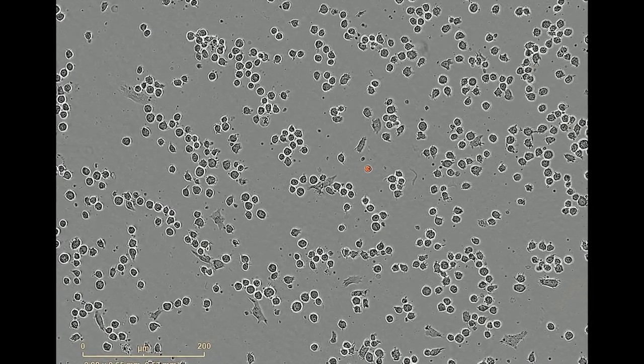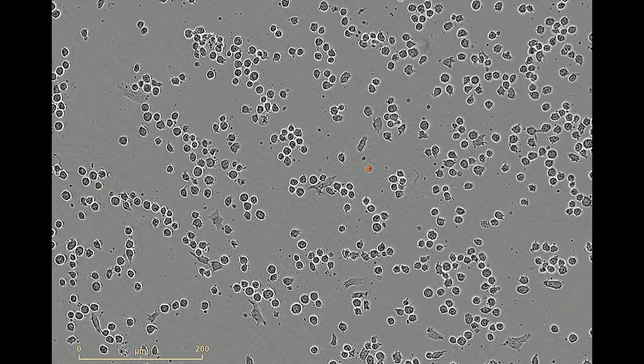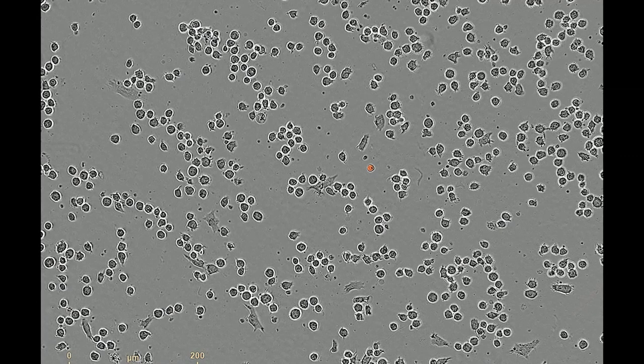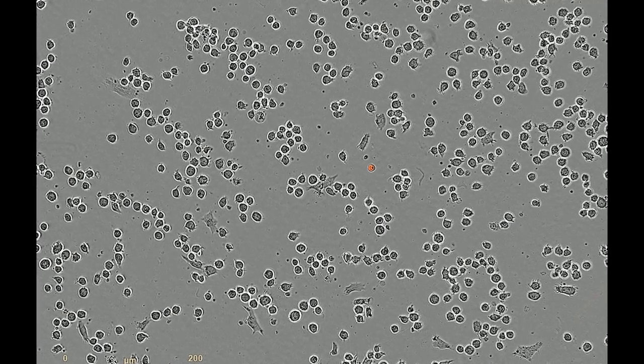To observe phagocytosis in these cells the Parkinson protein alpha-synuclein was labeled with pH-rhodo and added to these cells. The labeled protein is non-fluorescent under normal conditions.